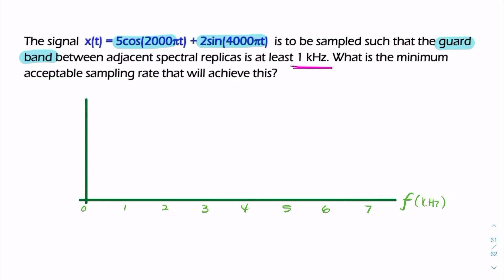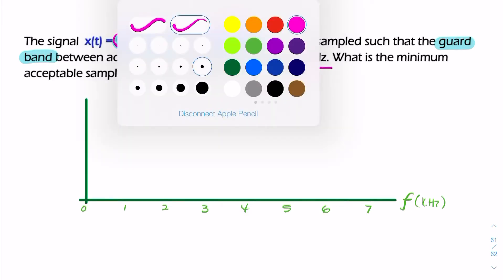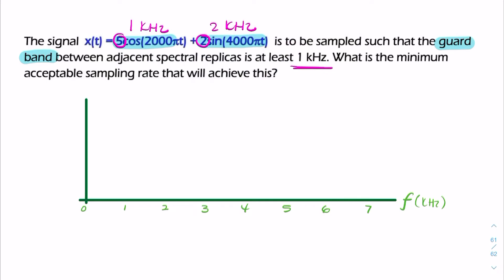So the cosine has a frequency of 1 kilohertz, and the sine has a frequency of 2 kilohertz, and the relative amplitudes are 5 and 2. So if we were to sketch this in the frequency domain, it would look something like this. We would have an amplitude of 5 and an amplitude of 2, at 1 and 2 kilohertz. So that's our message, this is x of t.